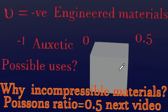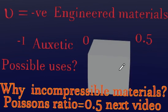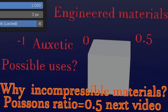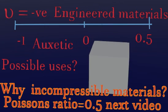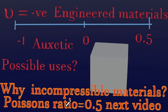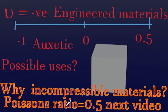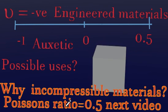For auxetic materials, there is extension in the lateral directions. If we take extension as positive and plug it into the formula — which has a negative sign by definition — then we get a negative Poisson's ratio. That is the key point, and I think it has been sufficiently demonstrated.